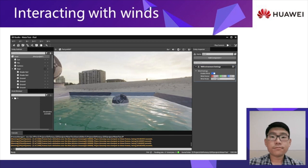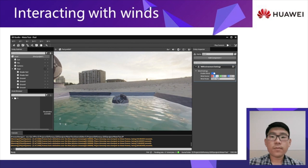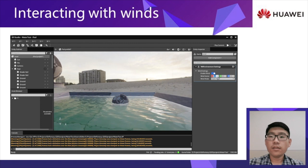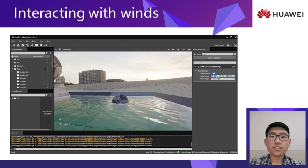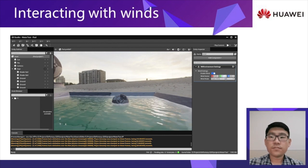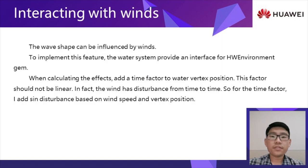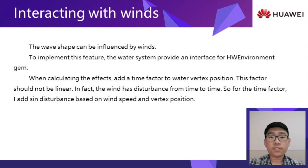The next feature is interaction with wind. The wind in O3DE is developed by my colleague Jianwen. Turn on the switch in the panel and we can adjust the wind vector. The wave goes towards the wind direction and the speed is influenced by wind speed synchronously. When calculating the effects, a time factor is added to the water vertex position. This factor is not linear — the wind has disturbance from time to time. So for the time factor, I add a sine disturbance based on wind speed and vertex position.